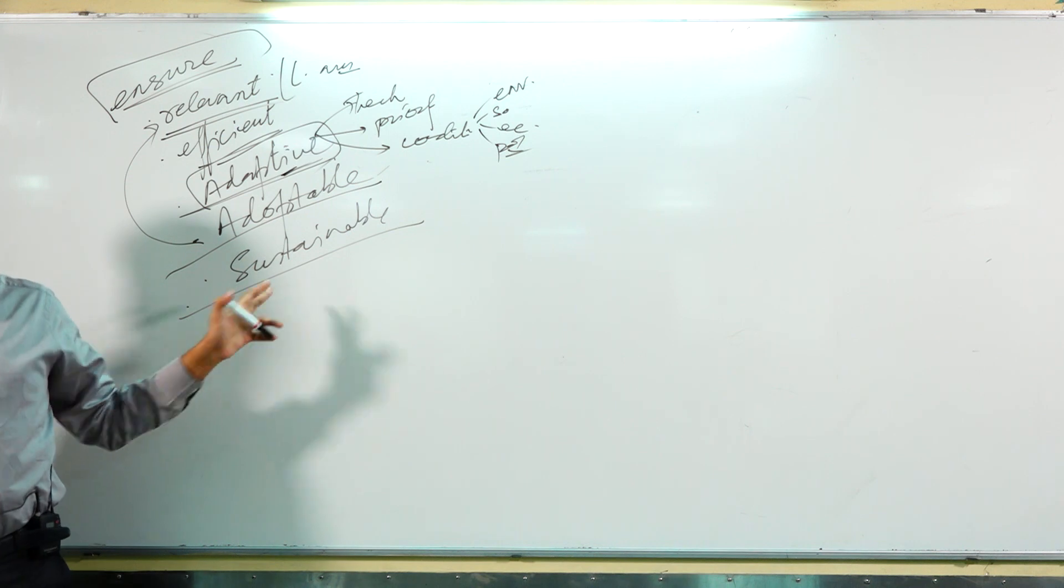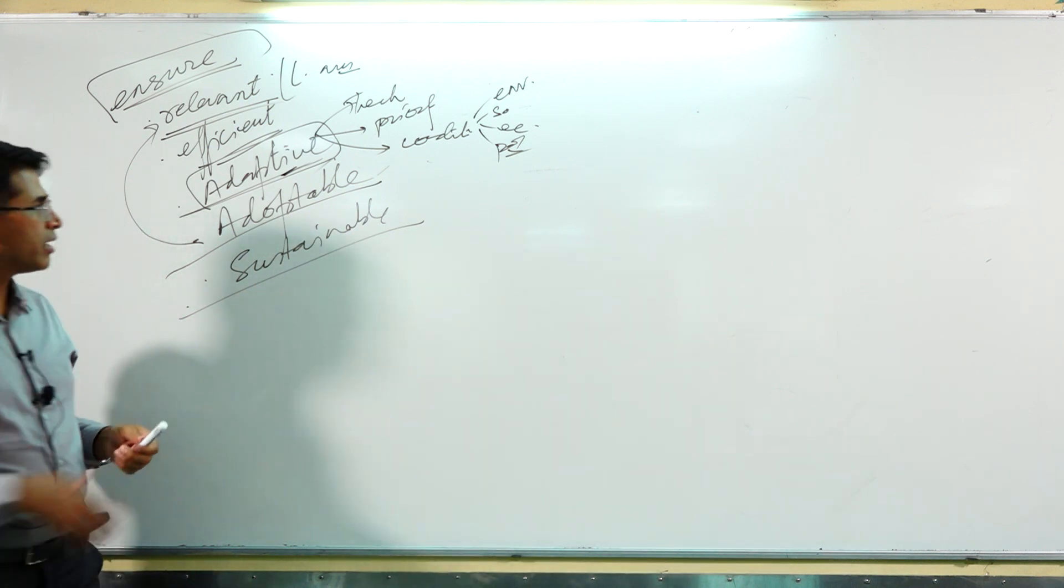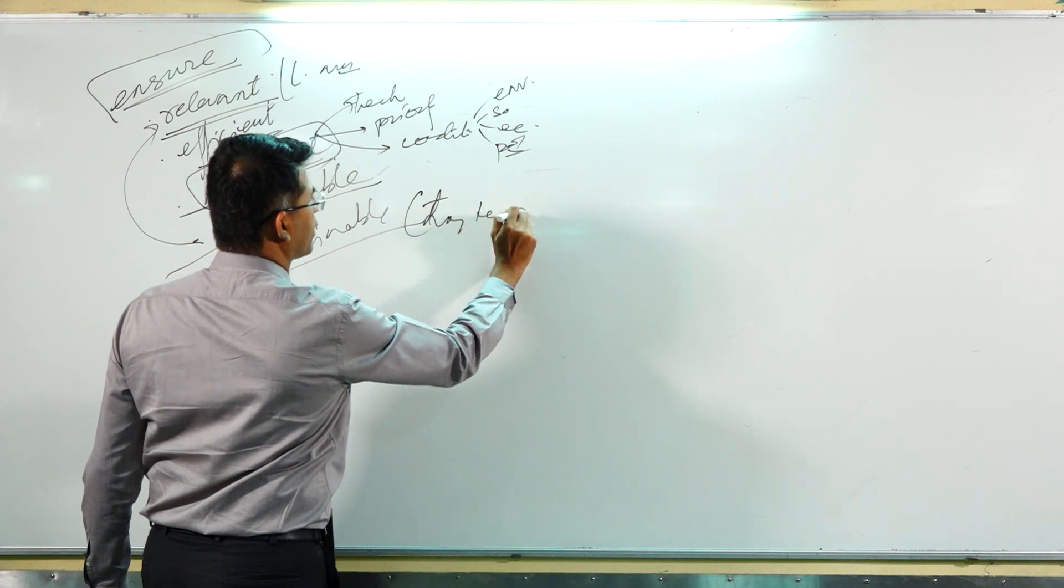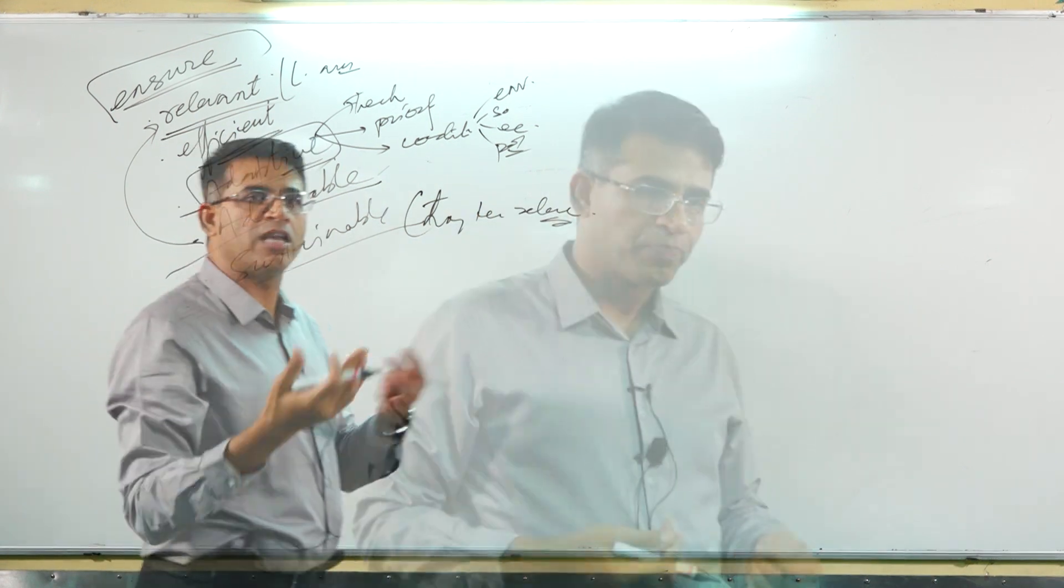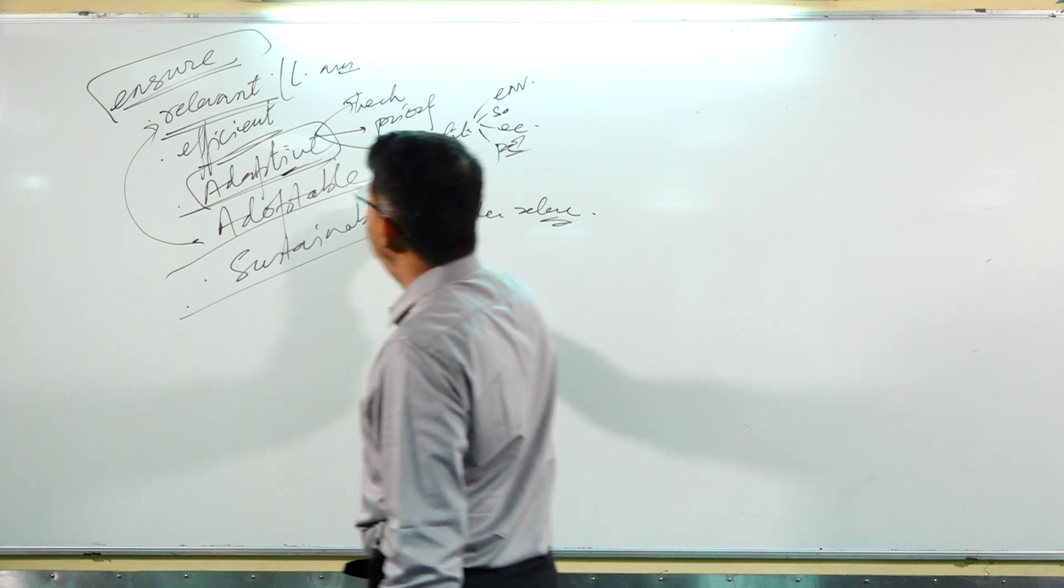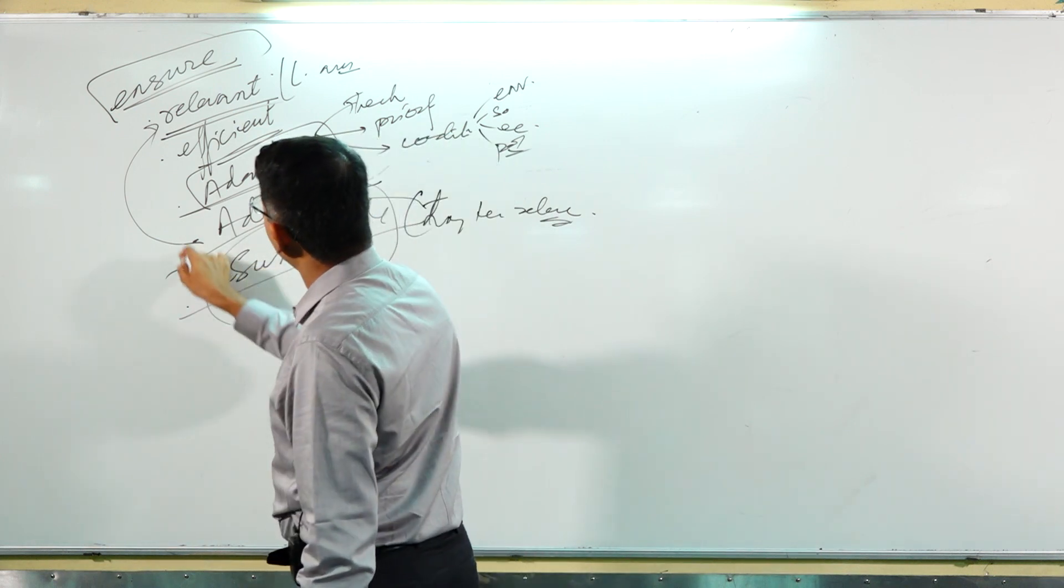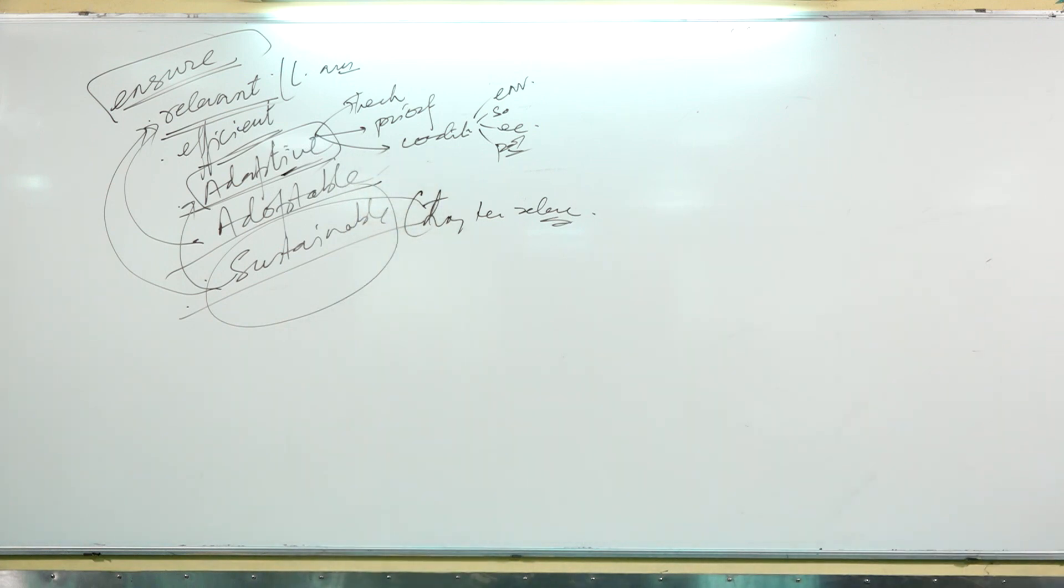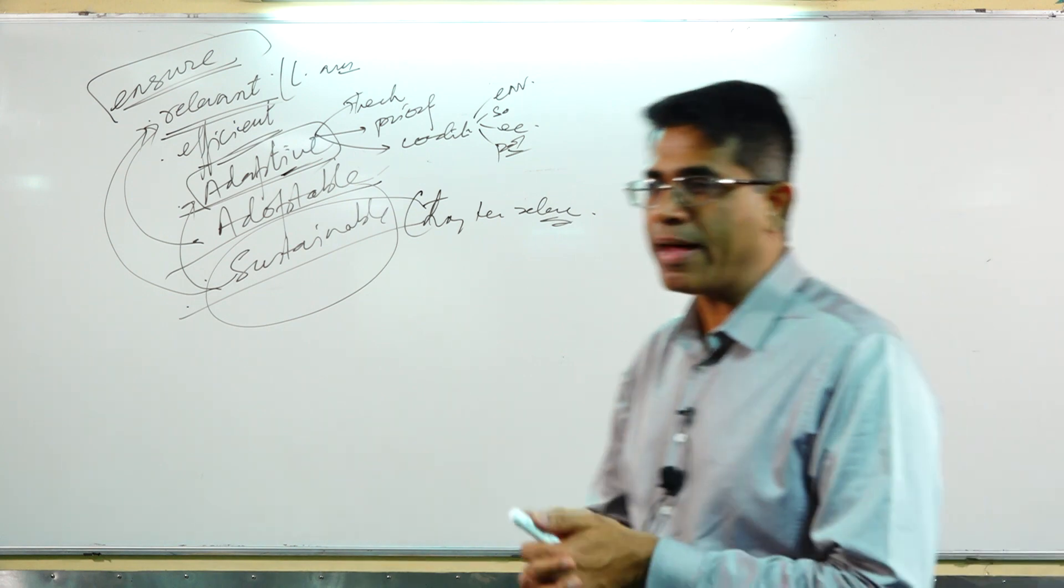And sustainable, long-term relevance. Should be long-term relevance. Intergenerational somewhere. Sustainability is also part of adaptive is also part of relevance. These are the five things I want to ensure if I am trying to implement ecosystem-based management.